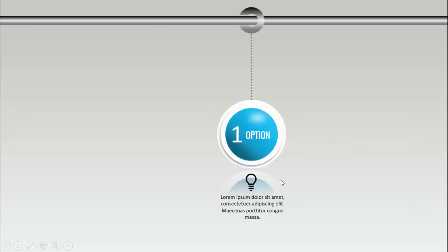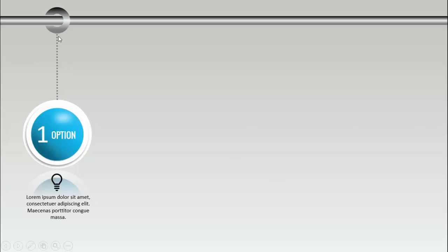In today's tutorial I'm going to show you how to create a five hanging options infographic slide in PowerPoint. This is how the slide works — I have created a bar at the top, and when I click very fast it will show you the first option. You can adjust the speed according to your requirement.